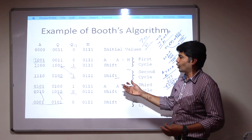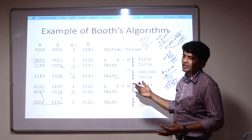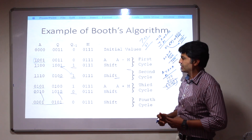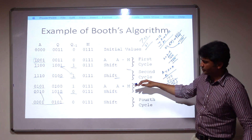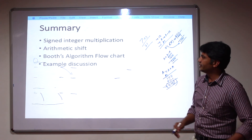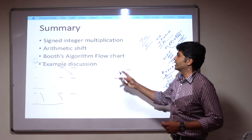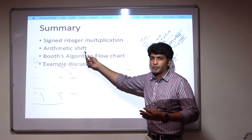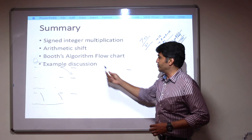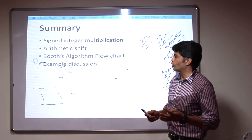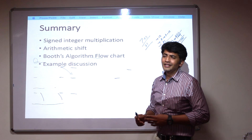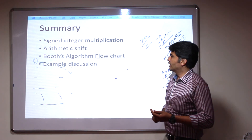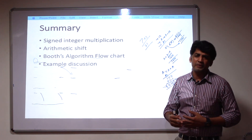You can apply this to any combinations — that is signed binary multiplication. Booth's algorithm supports signed binary multiplication. Here is the summary: we started with signed integer multiplication, discussed arithmetic shift, then the Booth's algorithm flowchart, and finally worked through the example for Booth's algorithm. This is the end of the Booth's algorithm explanation. Thank you.